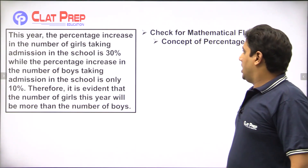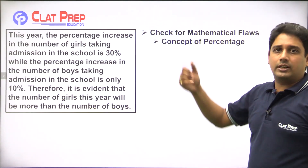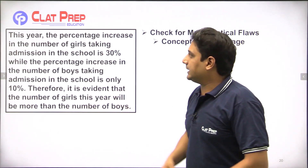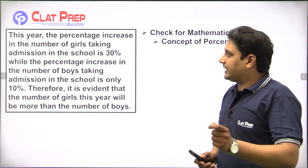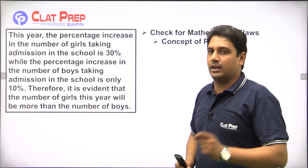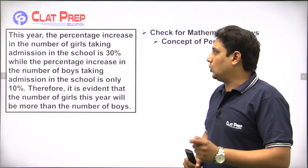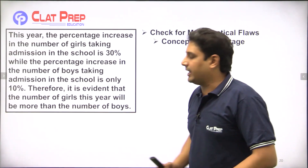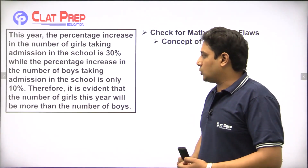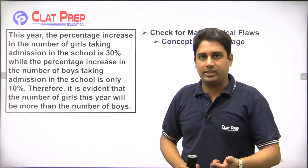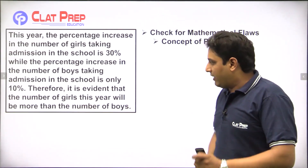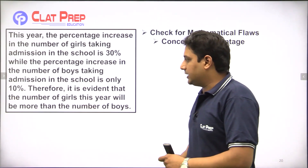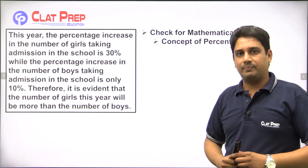Next one — how do you identify a flaw based on percentage? Look at the argument: this year the percentage increase in the number of girls taking admission in the school is 30%, while the percentage increase in the number of boys taking admission is only 10%. Therefore, it is evident that the number of girls this year will be more than the number of boys.